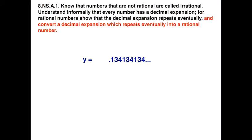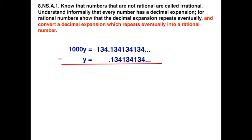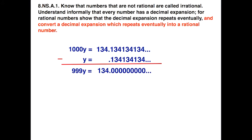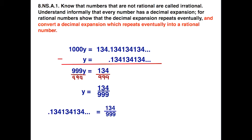Let's take another example. We set up our equation and notice that we have three digits that repeat: 1, 3, 4. Since it's three digits, we need to multiply by 1000. We do our subtraction, which eliminates the repeating decimals, then eliminate all of the zeros and divide by 999. We get 134 over 999. So the fraction 134/999 is the rational equivalent of the repeating decimal 0.134134, and so forth.